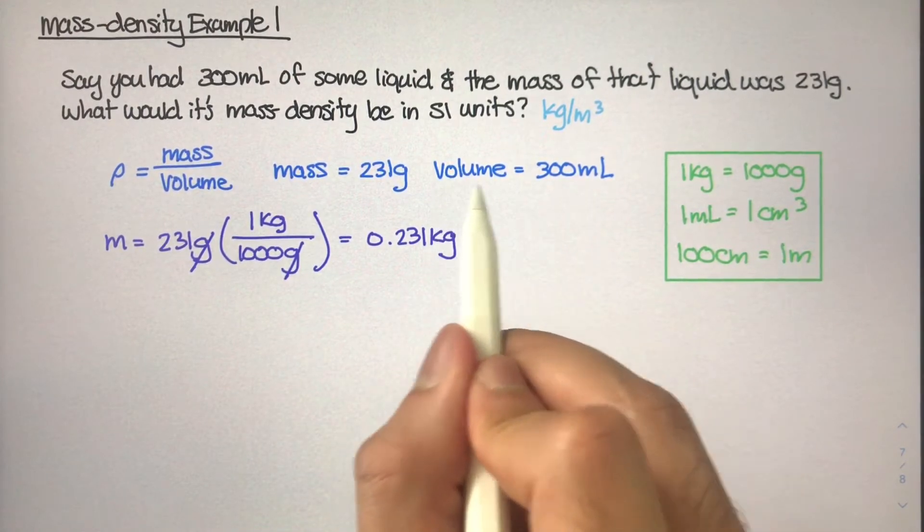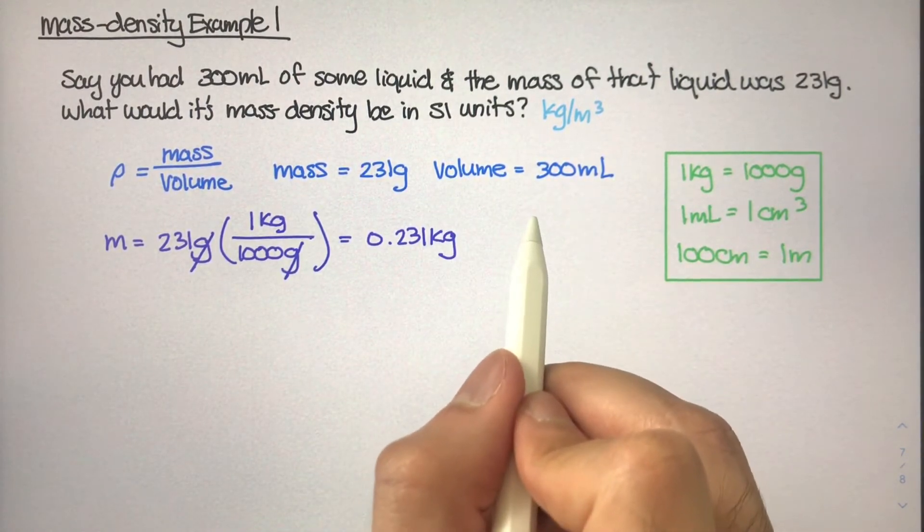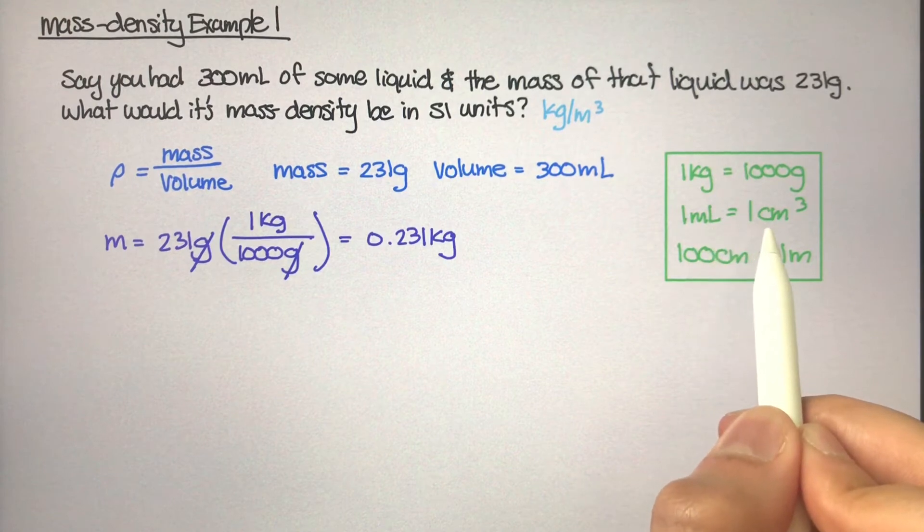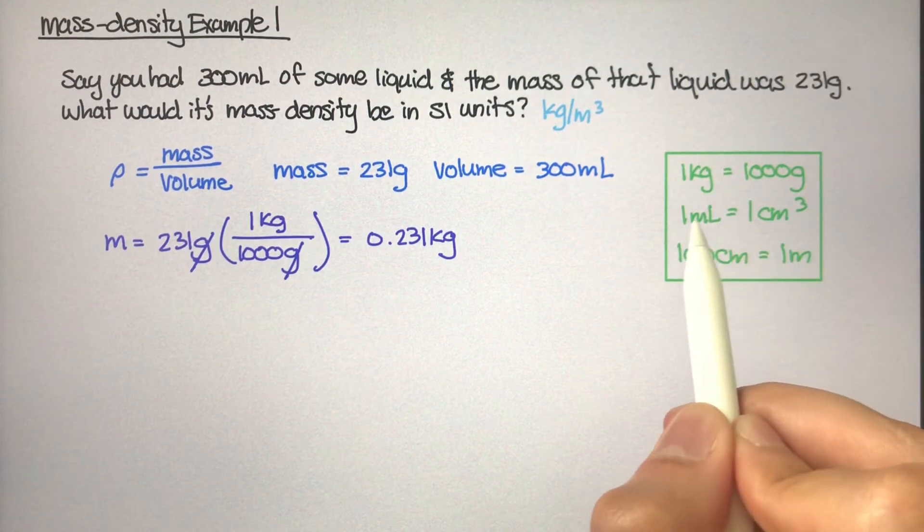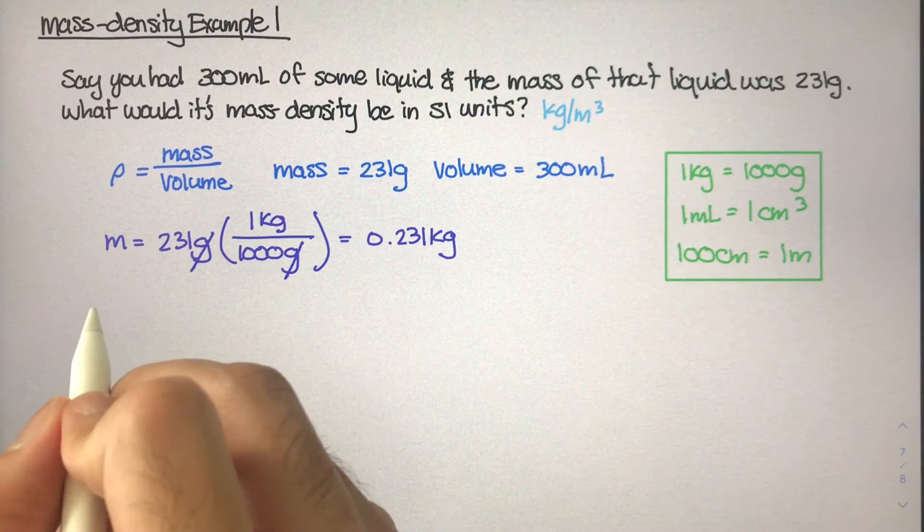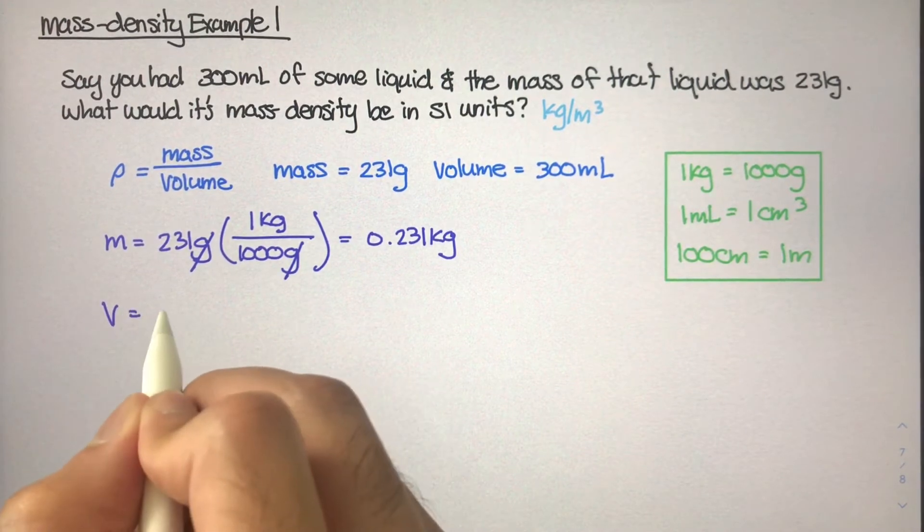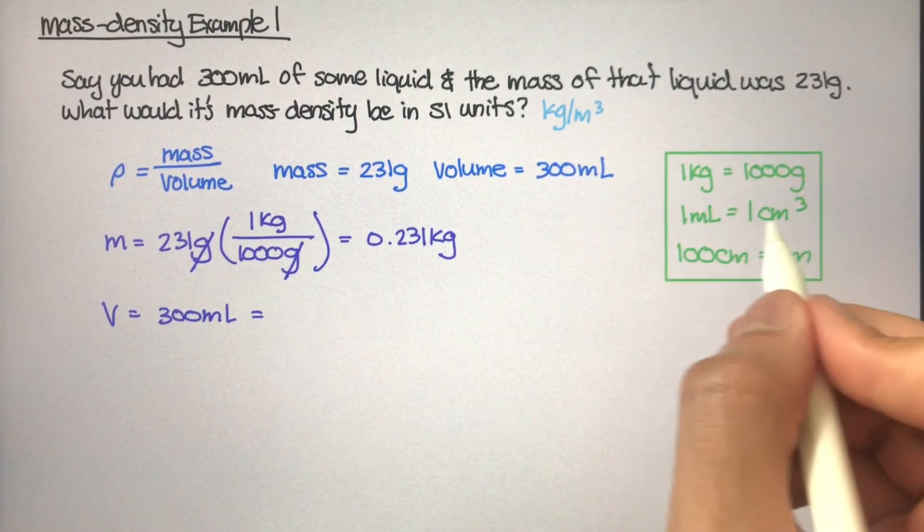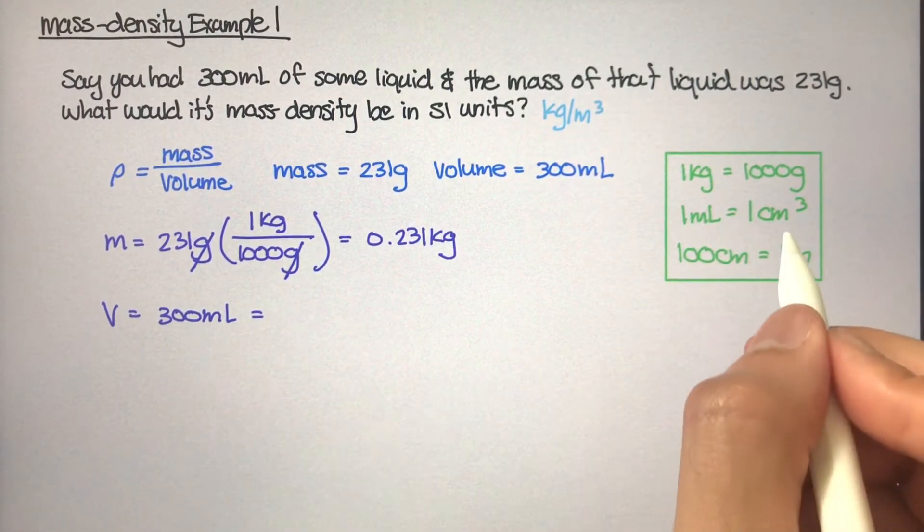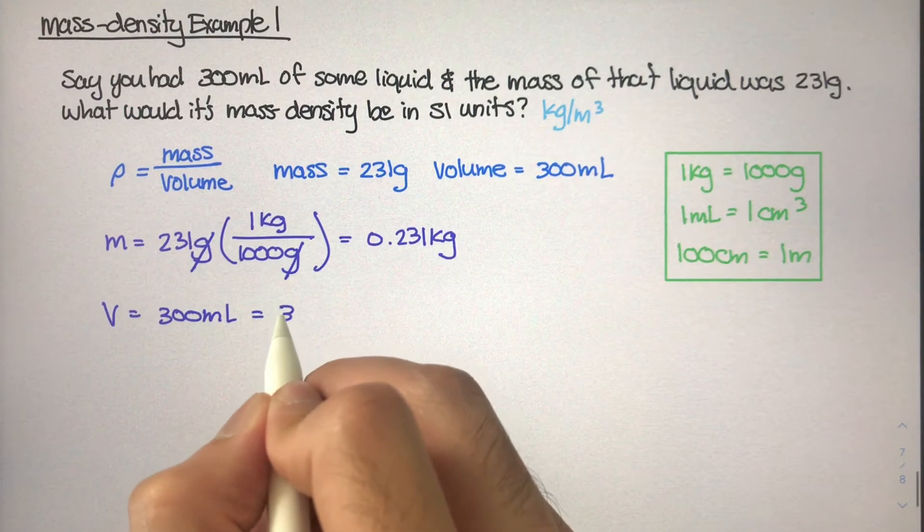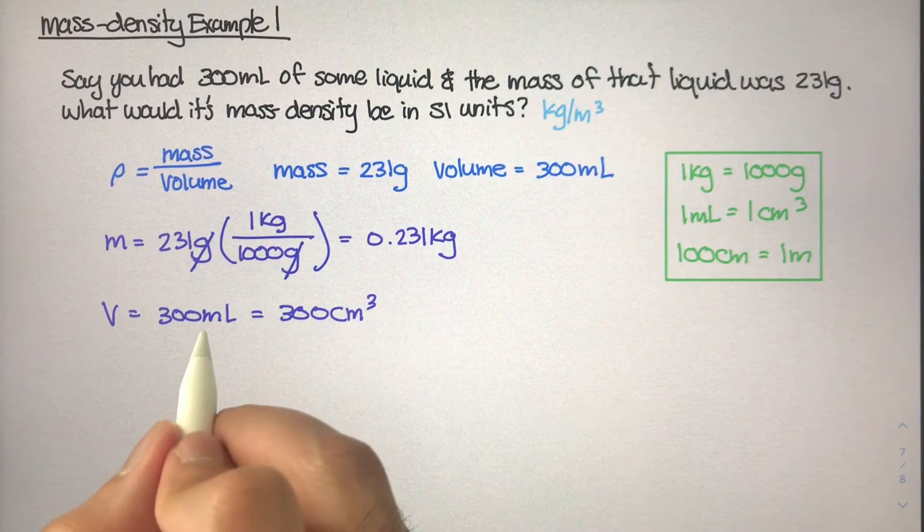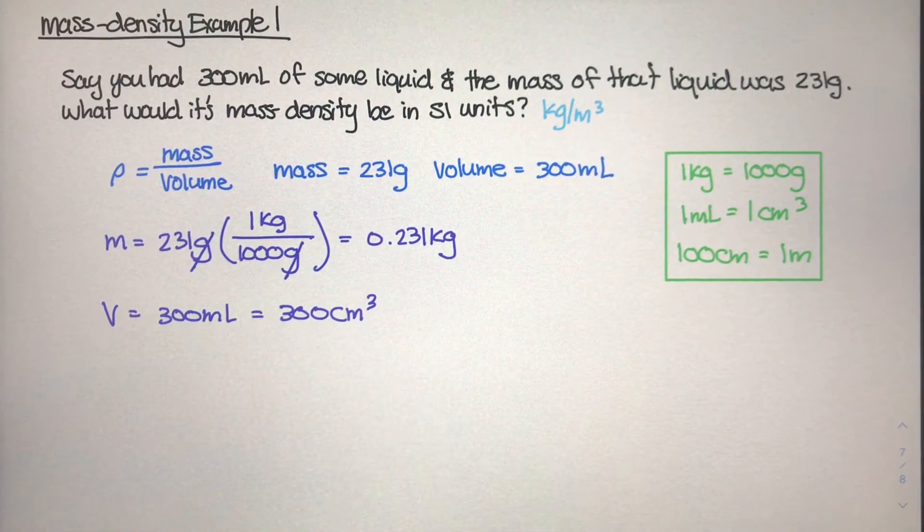Let's work on this volume. The volume is going to be a little bit more difficult, but it shouldn't be too bad. Looking at our conversions, we can see that one milliliter equals one centimeter cubed. These are both unit volumes. If I said volume equals 300 milliliters, that's really just a one-to-one relationship between milliliters and centimeters cubed. This is really the same as 300 centimeters cubed. One milliliter equals one centimeter cubed.